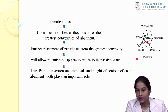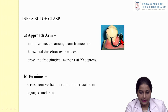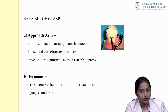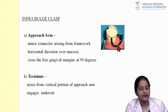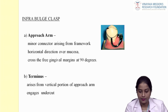The infrabluge clasp arm has an approach arm which arises from the rigid framework, crosses the mucosa in a horizontal direction, then crosses the free gingival margin at 90 degrees. There is a terminus arising from the vertical projection of the approach arm. The approach arm serves as a minor connector, and it is the only minor connector that is flexible — flexibility is needed for easy insertion and removal since it engages the undercut from the apical direction.